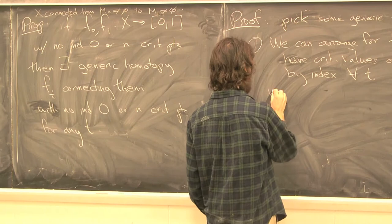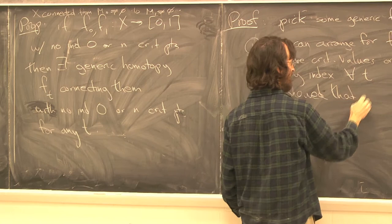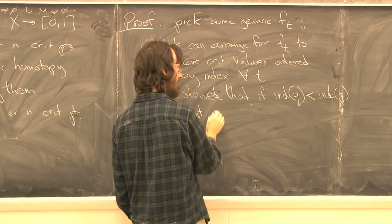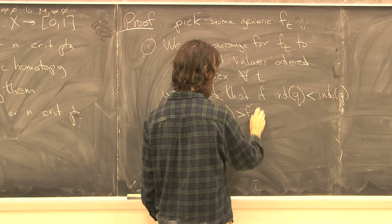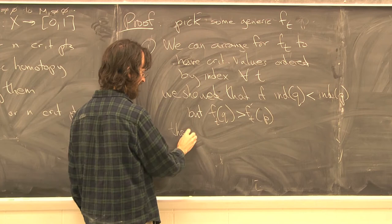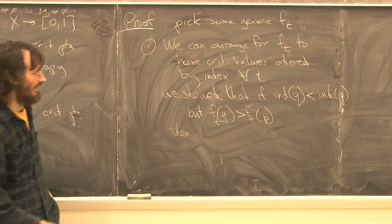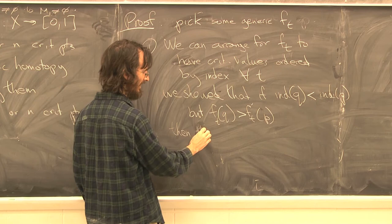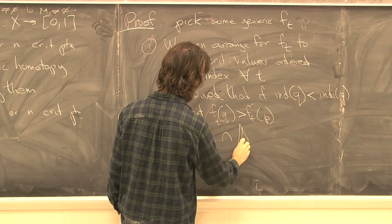So if the index of the higher-positioned critical point is lower than the index of the lower-positioned one, even in a one-parameter family through time, we'll have disjointness of ascending and descending manifolds. In other words, if the index of q is less than the index of p, but f(q) > f(p), the descending manifold for q and ascending manifold for p remain disjoint even through time.